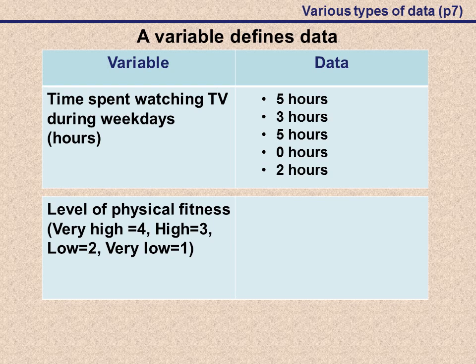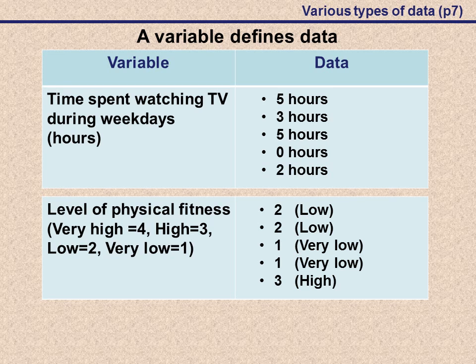The level of physical fitness is another possible variable we could have. Here you can see 1 is a very low level of physical fitness, where 4 is a very high level of physical fitness. Our data would look something like this.